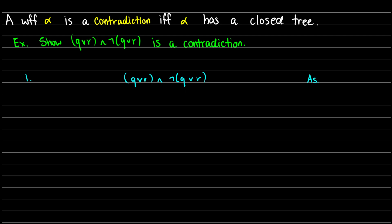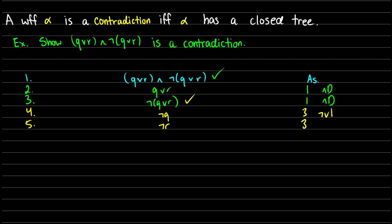We have 'and' in our first line, so this makes things really easy because we can just break it apart. We know that 'q or r' is true and 'not-q or r' is true. These both come from line 1, and-decomposition. Next, let's do 'not-(q or r)' — for the same reason, we know not-q is going to be true and not-r is going to be true. That's line 4 and 5, from line 3, not-or decomposition.